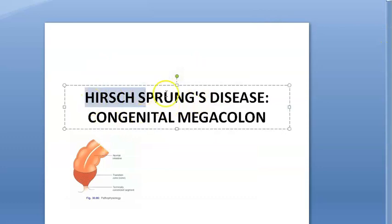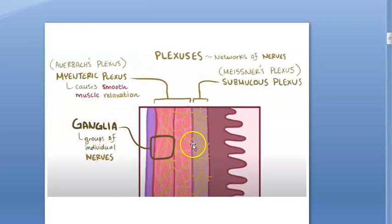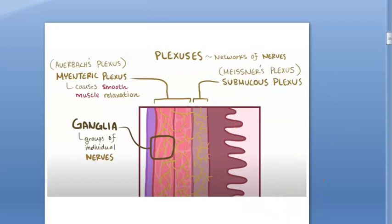This is the congenital form; there is also an acquired megacolon which is not the focus here. The layers shown include the intestinal lumen, where food passes, along with the Meissner's plexus and the myenteric plexus. In Hirschsprung's disease, all of these nerve plexuses are absent.